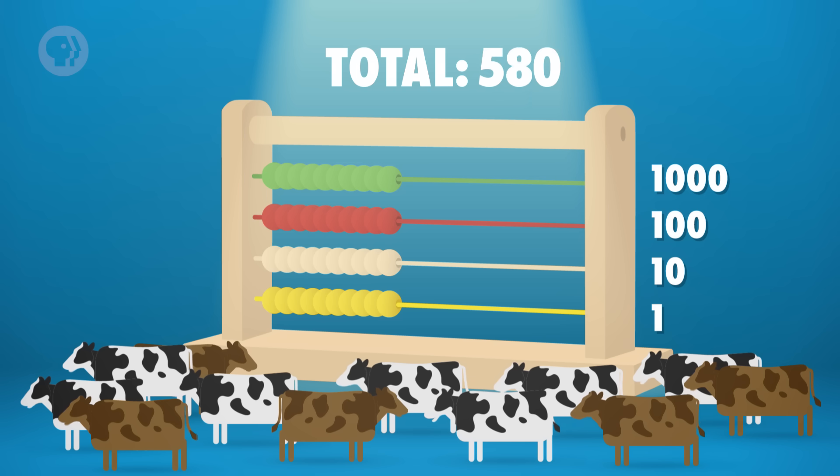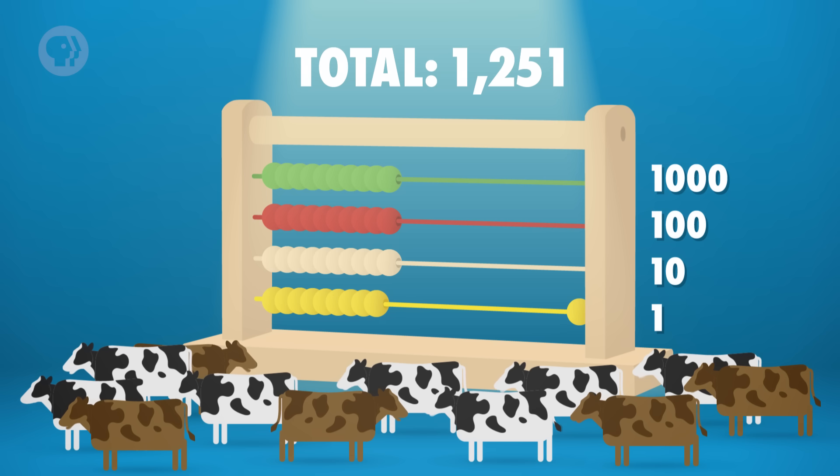So, if we were to add 1,251, we would just add 1 to the bottom row, 5 to the second row, 2 to the third row, and 1 to the fourth row. We don't have to add in our head, and the Abacus stores the total for us.